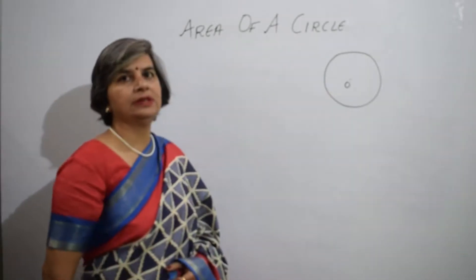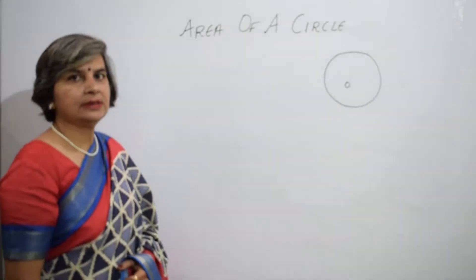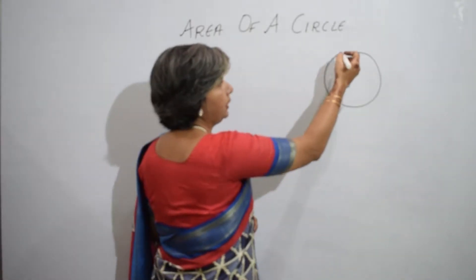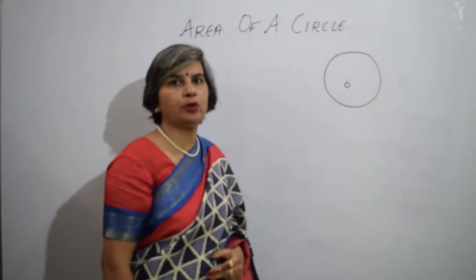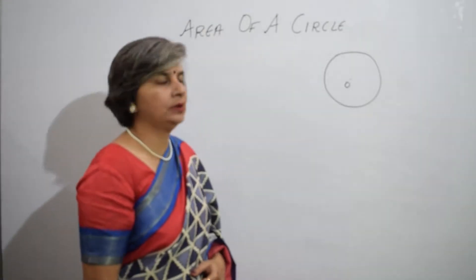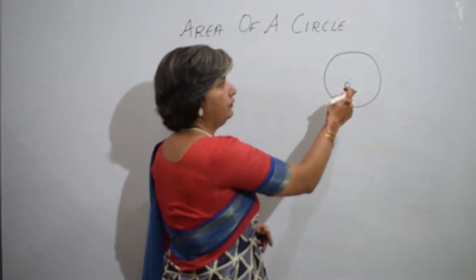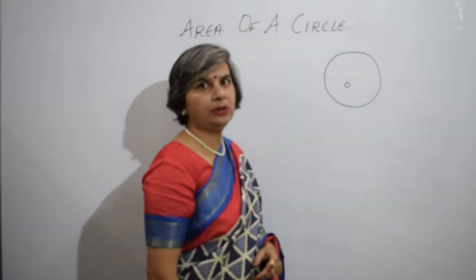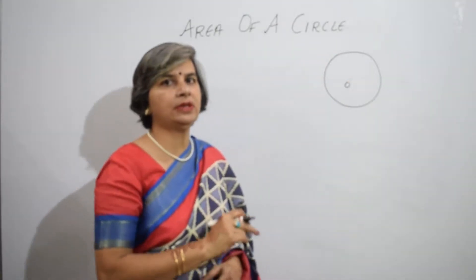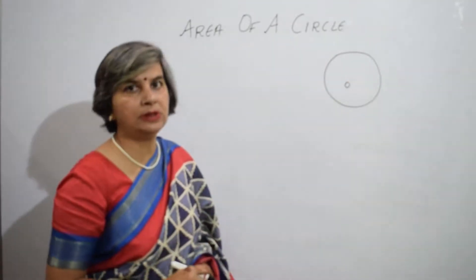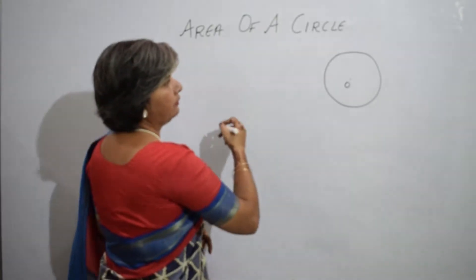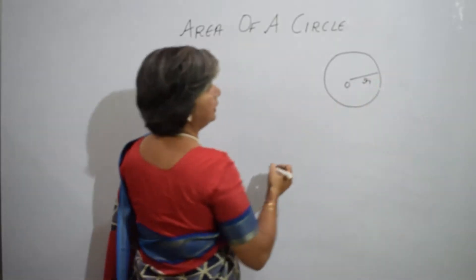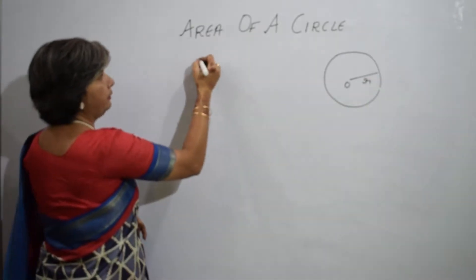The area of a circle. A circle is a figure in which every point on the boundary is equidistant from a point O. If O is the point equidistant from all points on the boundary, then O is said to be the center of the circle. If we have a circle of radius r, then...